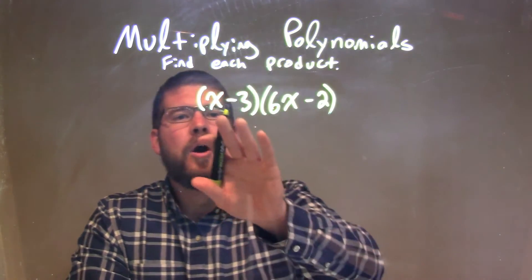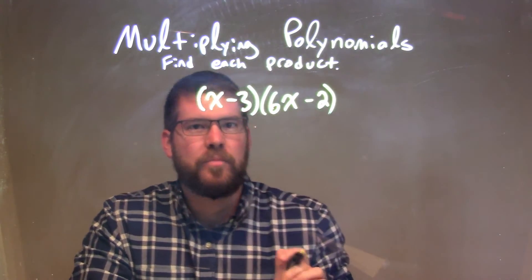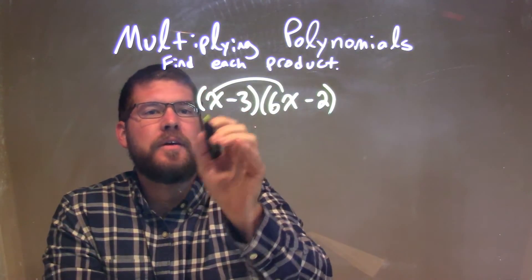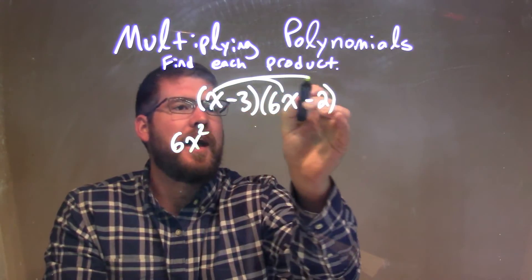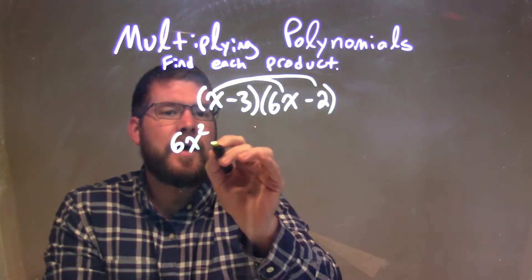So now we're going to take all parts of my first parentheses and multiply them by all parts of my second parentheses. So x times 6x, let's draw all our arcs here, x times 6x is 6x squared. x times 2, or negative 2, there's a minus 2 there, is a minus 2x.